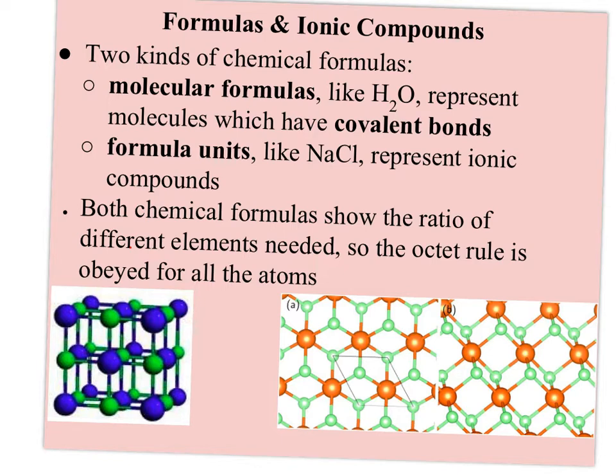Ionic compounds don't form true individual molecules. They form these lattices, and I've got the pictures on the bottom here again showing you the lattice of the alternating positive and negative ions.